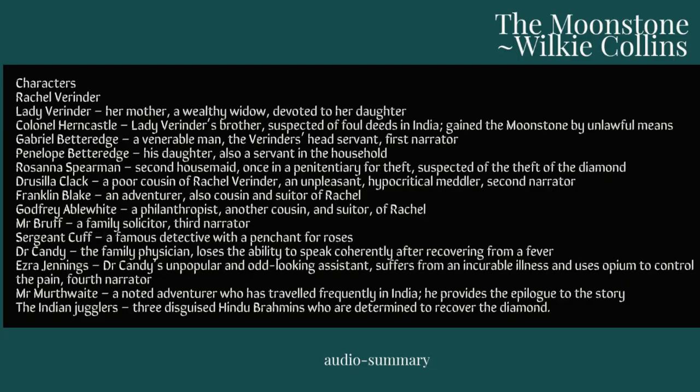Rachel Verinder, a young English woman, inherits a large Indian diamond on her 18th birthday. It is a legacy from her uncle, a corrupt British army officer who served in India. The diamond is of great religious significance and extremely valuable, and three Hindu priests have dedicated their lives to recovering it. The story incorporates elements of the legendary origins of the Hope Diamond, or perhaps the Orloff Diamond or the Koh-i-Noor diamond. Rachel's 18th birthday is celebrated with a large party at which the guests include her cousin Franklin Blake. She wears the Moonstone on her dress that evening for all to see, including some Indian jugglers who have called at the house.